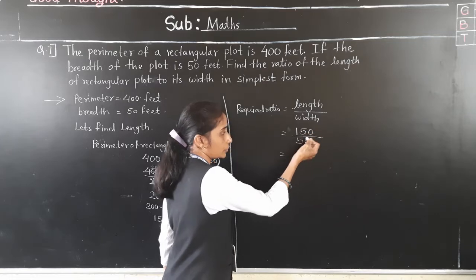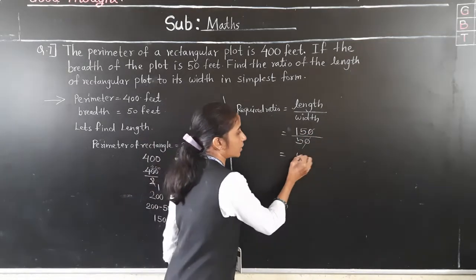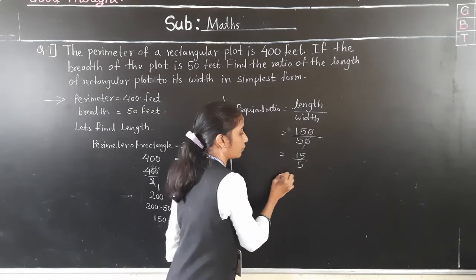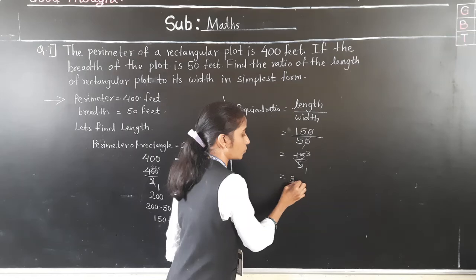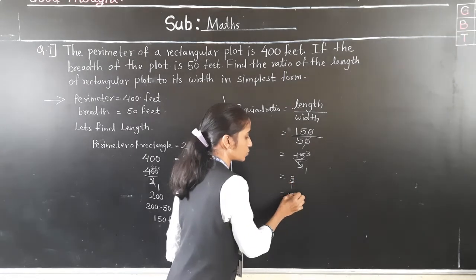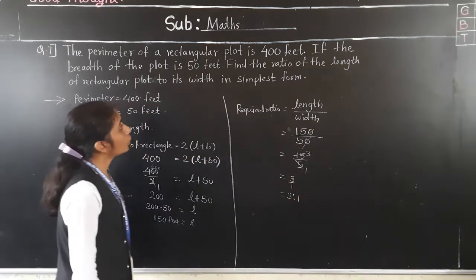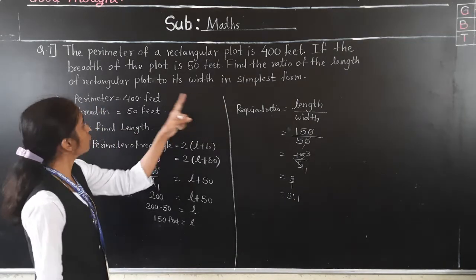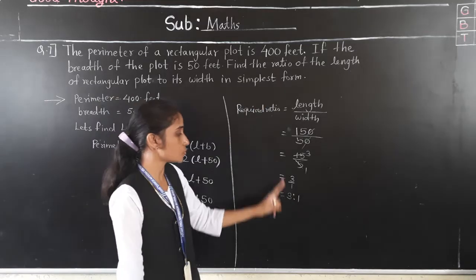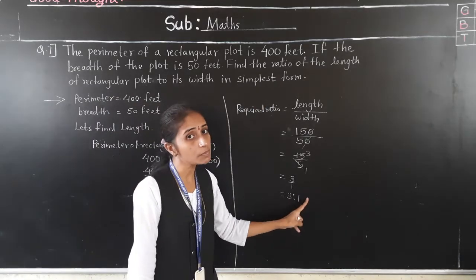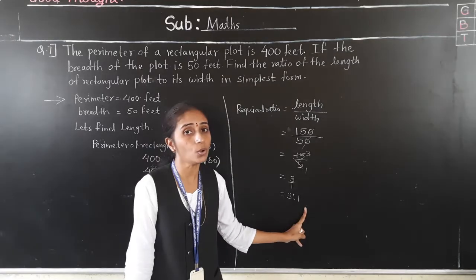Now reduce to lowest terms. Cancel the trailing zeros — 150 and 50 become 15 and 5. 5 ones are 5, 5 threes are 15. So 3 upon 1. The required ratio is 3 is to 1.